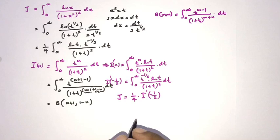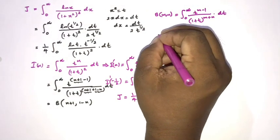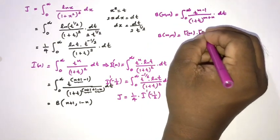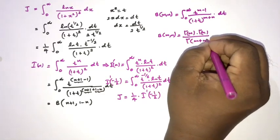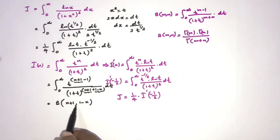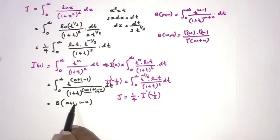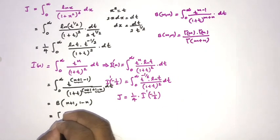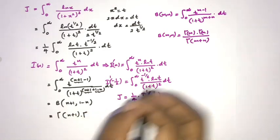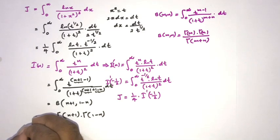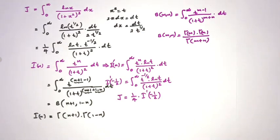Using the relation between Beta and Gamma functions: Beta(m,n) equals Gamma(m)·Gamma(n) over Gamma(m+n). The denominator has Gamma(m+n), and (n+1)+(1-n) equals 2, so Gamma(2) equals 1. Therefore I(n) equals Gamma(n+1)·Gamma(1-n).